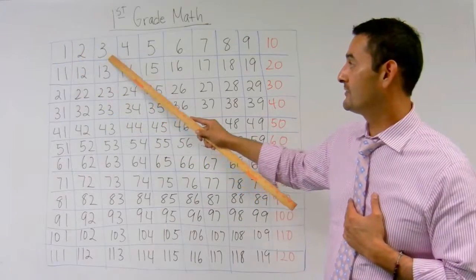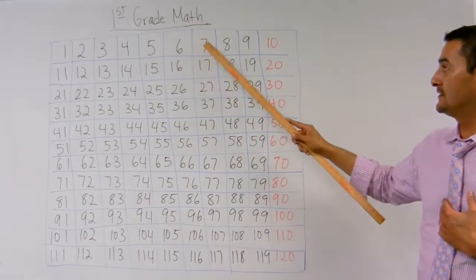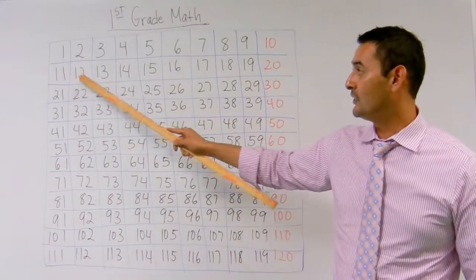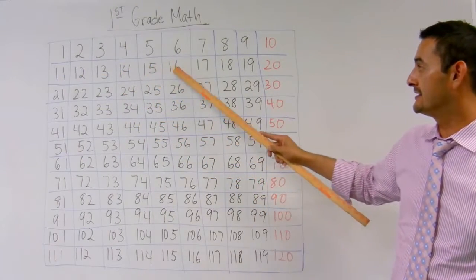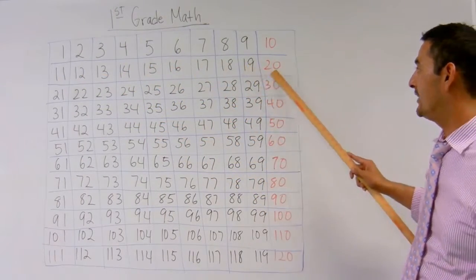1, 2, 3, 4, 5, 6, 7, 8, 9, 10, 11, 12, 13, 14, 15, 16, 17, 18, 19, 20.